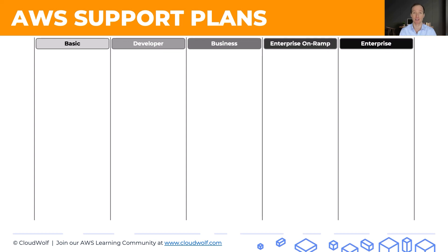In AWS, there are five support plans ranging from basic to enterprise. As you go from left to right, they become more expensive, but you also get more features. Unfortunately, you have to learn these off by heart for the exam, and hopefully this image will help you remember them in a structured way.